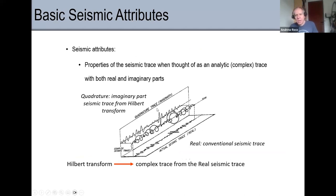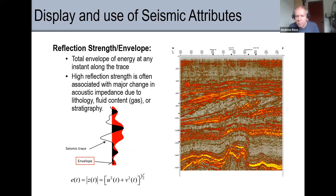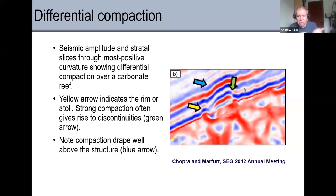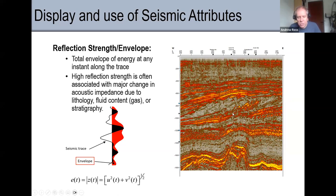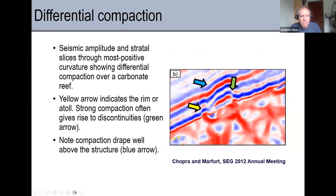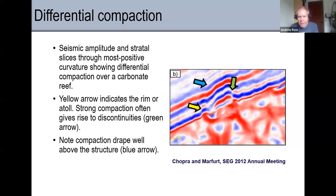I can also plug attributes into neural nets to use them as input to my classification. Here are some attributes combined with flattening — what looks like an atoll — and this is curvature: where there's an edge or a bend, I get a signal from the seismic. I could look at amplitude data and find these things manually, but calculating something like curvature might help. I can use attributes to make my interpretation a little bit better or easier.